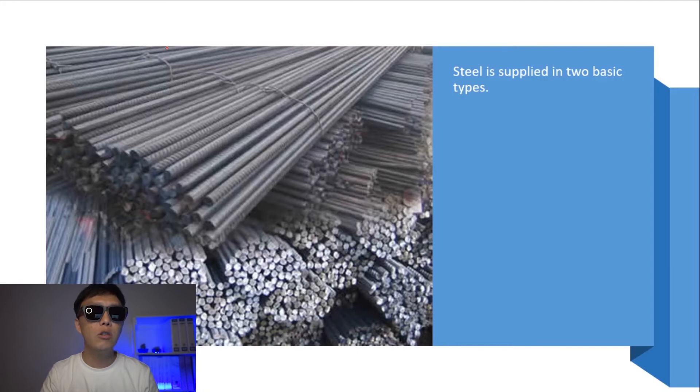Let's look at the steel code that you will see in a drawing. Steel is applied in two basic types. R means code for mild steel bar. For example, R6 means mild steel bar 6mm diameter. The bar diameter here is 6mm.